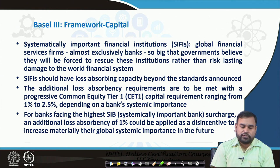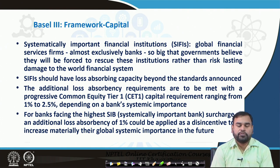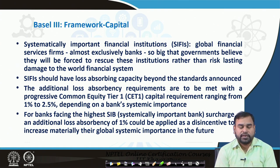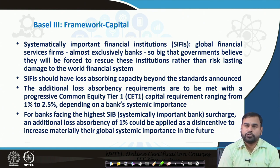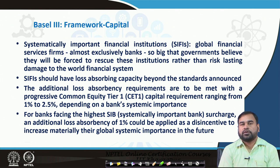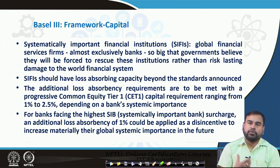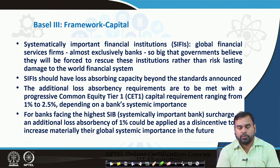Another recommendation is regarding global financial services firms called systematically important financial institutions. Some banks are so big that governments believe they will be forced to rescue these institutions rather than risk lasting damage to the world's financial system. Because the importance of the bank is so large and common people's dependency on the banking sector is quite high, they want to impose a precautionary move so that the probability of failure of that particular system will be relatively less.